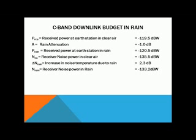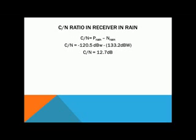C-band downlink budget in rain: received power at earth station in clear air is minus 119.5 dBW; rain attenuation minus 1 dB; received power at earth station in rain minus 120.5 dBW. Receiver noise power in clear air minus 135.5 dBW; increase in noise temperature due to rain 2.3 dB; receiver noise power in rain minus 133.2 dBW. Carrier-to-noise ratio in rain: C/N = minus 120.5 dBW minus (minus 133.2 dBW) = 12.7 dB.